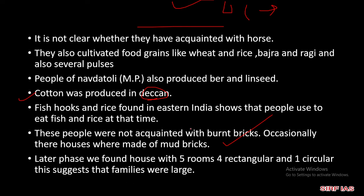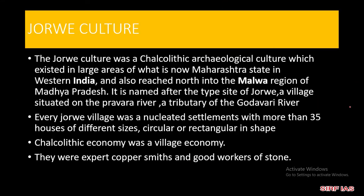इन सारे लोगों को burnt brick नहीं पता थी — उससे इनका तालुकात कम था। ज़्यादातर इनके जो houses थे, वो मिट्टी के — मतलब mud bricks के बने होते थे। Later phase में देखते हैं कि पाँच कमरे हैं — घरों में पाँच कमरे हैं, जिसमें चार rectangular कमरे हैं और एक circular कमरा है। यह दिखाता है कि families बहुत बड़ी हुआ करती थीं।